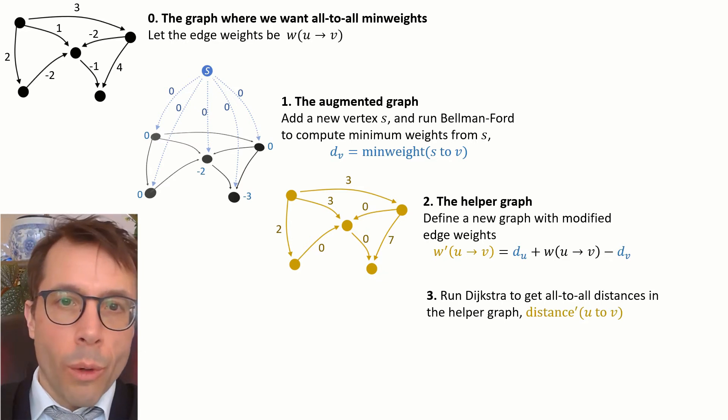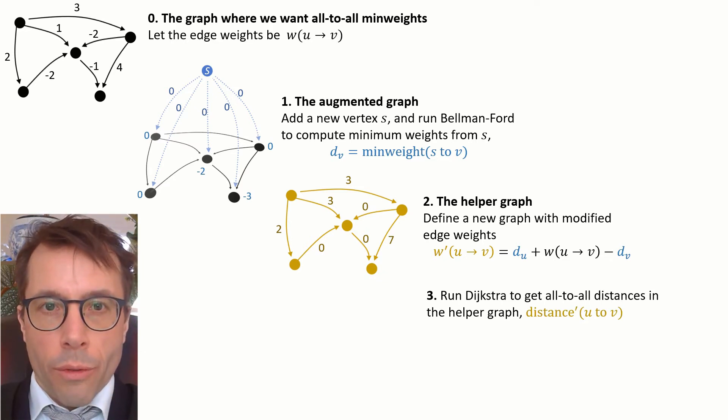Next we run Dijkstra's algorithm once from each vertex to get all-to-all distances in the helper graph, and let's call these distances distance prime.